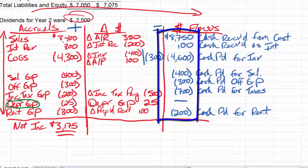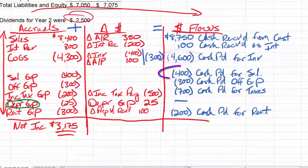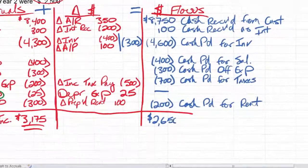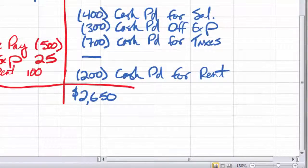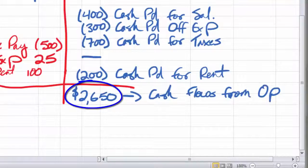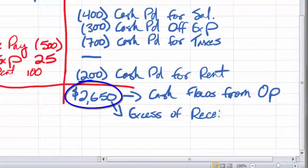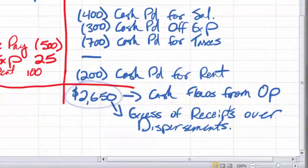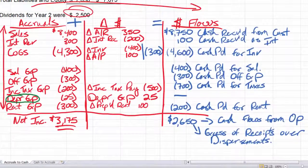Now I'm going to add these out. So I take the 8,750 plus 100 minus 4,600 minus 400 minus 300 minus 700 minus 200 and I get 2,650. Now the name of this depends. If I'm doing a formal statement of cash flows, then this is cash flows from operations or from operating activities. If I'm doing a cash style income statement, then this is the excess of receipts over disbursements. There's our example and that's our final number.